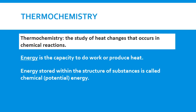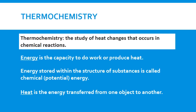Heat is the energy transferred from one object to another due to a temperature difference between the two objects. Heat always flows from the warmer object to the cooler object. In chemistry we take the system's point of view — the system is our reaction, what is reacting. The surroundings are everything else in the universe, and heat flow is described from the system's point of view: does the system absorb energy or release energy? The law of conservation of energy states that energy cannot be created or destroyed but is changed from one form to another, meaning the total energy of the universe remains constant — this is the first law of thermodynamics.